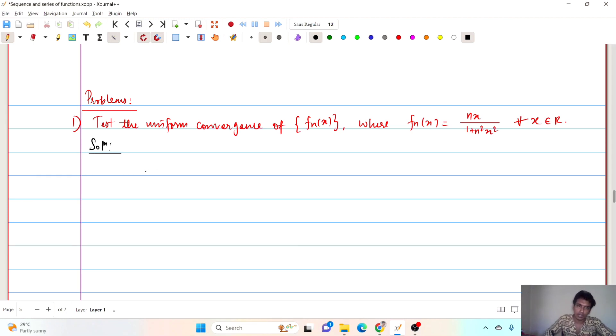First, let us try and identify the point-wise limit. fn(x) is limit n approaches infinity nx. So, if we take n as a common quantity, then this 1 upon n square x square upon x square simply x square. And n and this gets cancelled and this is equal to 0.